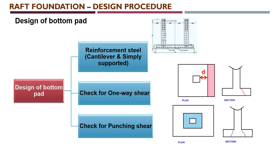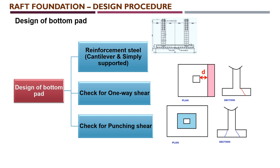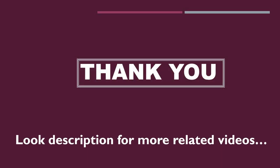Punching shear is a circumferential shear check around the column area at a distance D/2 from the column face, where D is the effective depth of the bottom raft. This circumferential shear stress acts around the column perimeter on the bottom raft and must also be checked. With both one-way shear and punching shear checks completed, the design procedure of raft foundation for the transmission line tower is complete. Thank you.